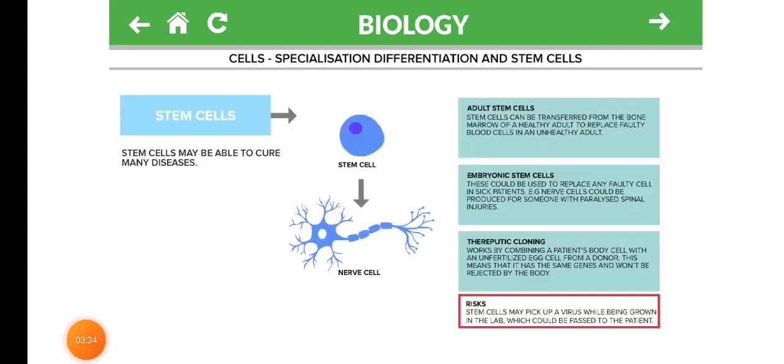Stem Cells. Stem cells can be able to cure many diseases. Adult Stem Cells: stem cells can be transferred from the bone marrow of a healthy adult to replace faulty blood cells in an unhealthy adult.